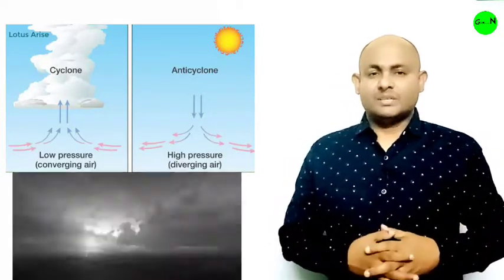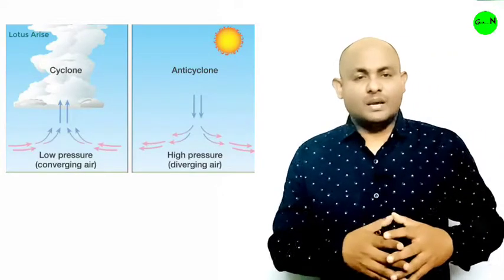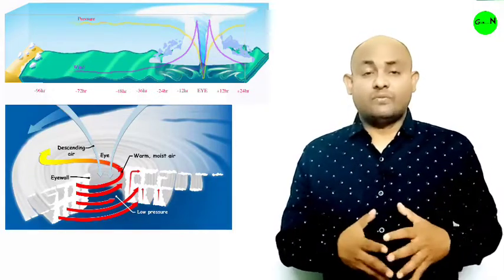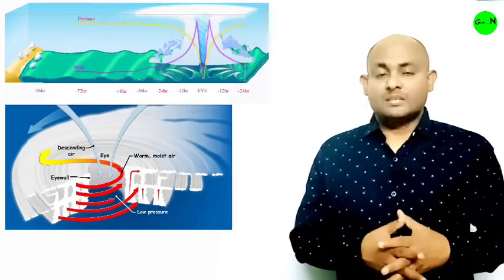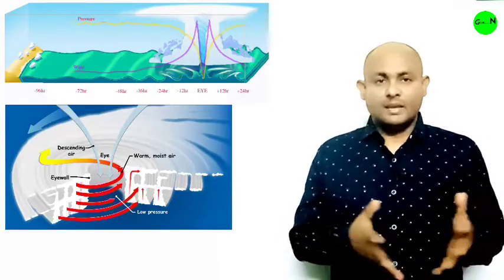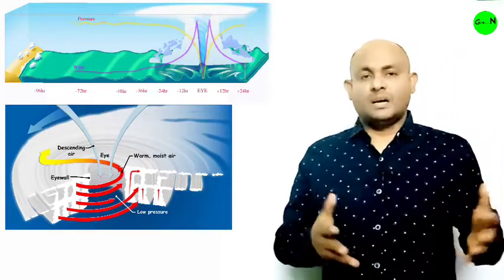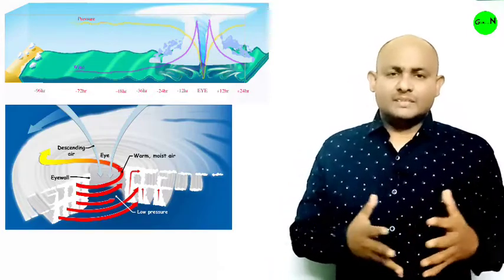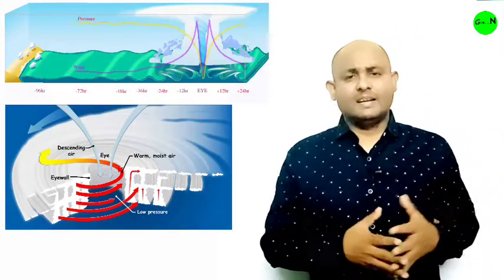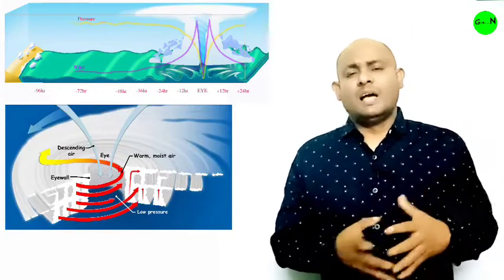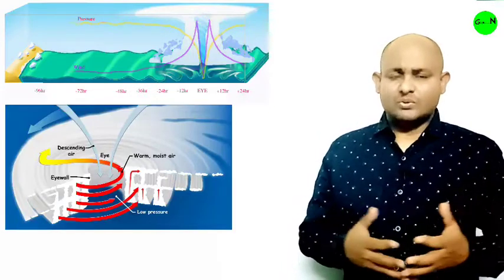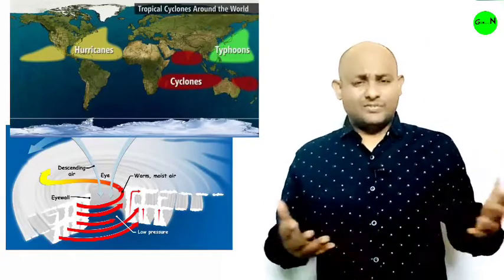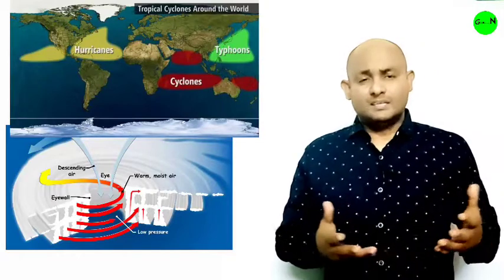A tropical cyclone is a low pressure storm system with very strong winds and high rainfall. It has numerous thunderstorms that form around a center point called the eye. Tropical cyclones usually form in areas with warm, moist air and water near the equator. They are most commonly called hurricanes in the Atlantic; in the Indian Ocean and South/Southeast Asia they are called cyclones; in East Asia they are called typhoons. Despite different names, they all fall under the same category: tropical cyclone.